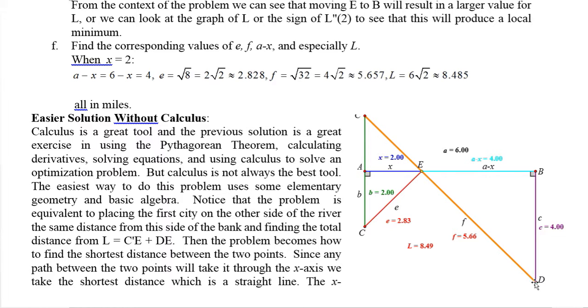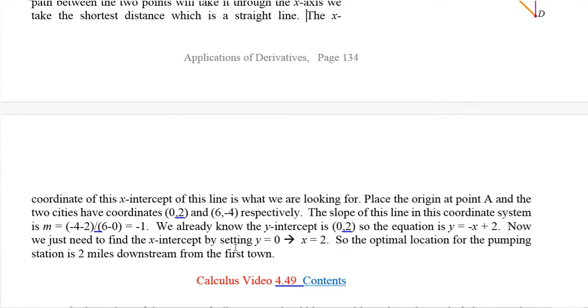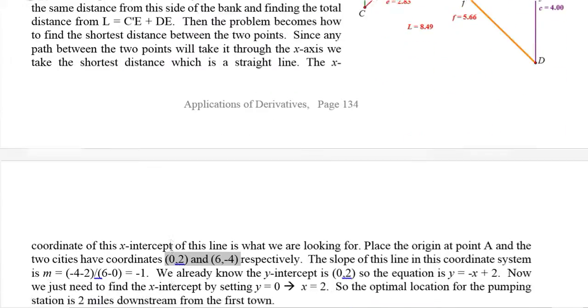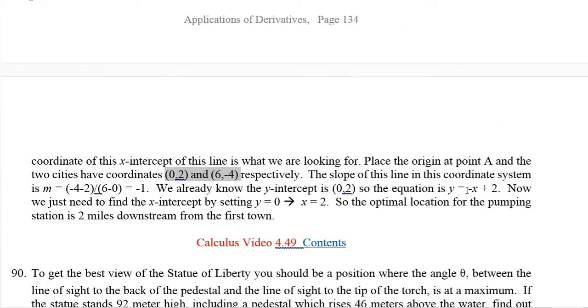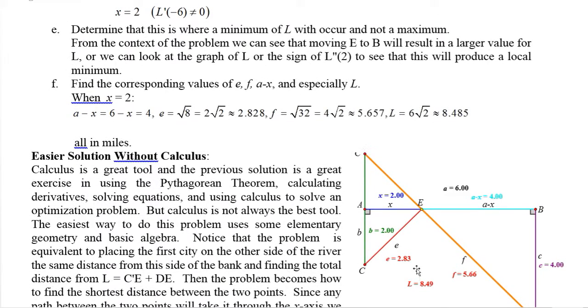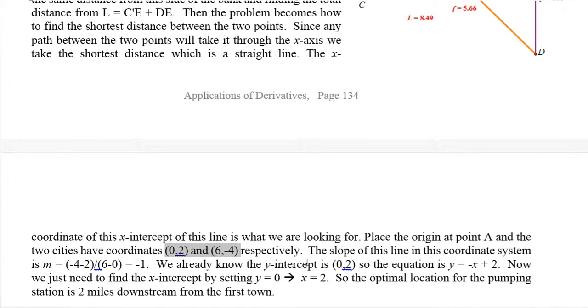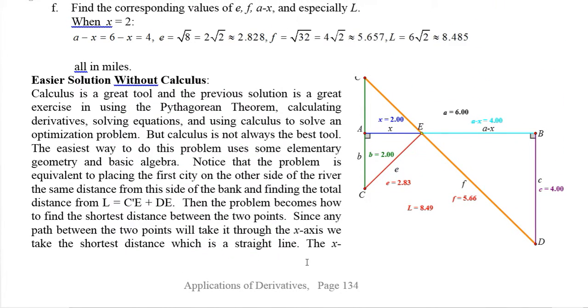There's some algebra involved, but it's much easier algebra. We're just going from 0, 2 to 6, negative 4. So the slope then is negative 4 minus 2 over 6 minus 0. We ended up going 6 to the right and 6 down, so that's a slope of negative 1. We know the y-intercept is 0, 2. So the equation of that line is just y equals negative x plus 2. We're just solving for the x-intercept, which clearly is when x equals 2.